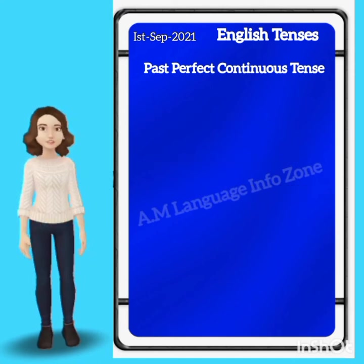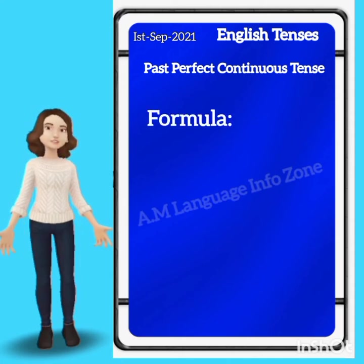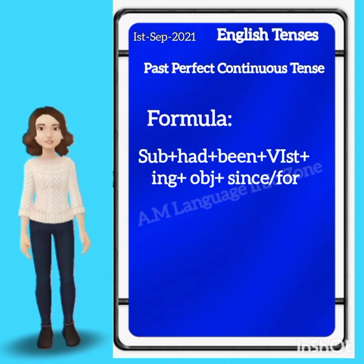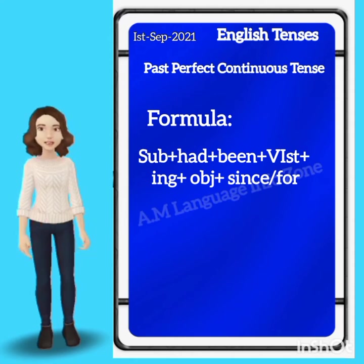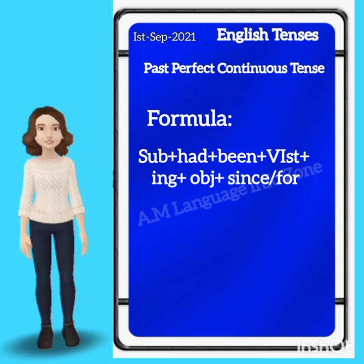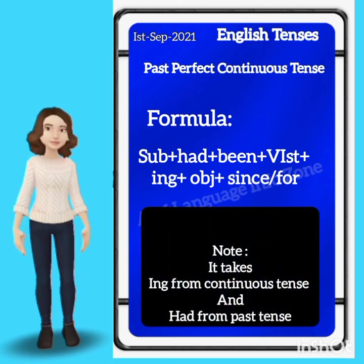Now let's get started with the formula. The formula is: Subject + had + been + verb + object + since or for. In this video you can see the words 'since' and 'for' are used.